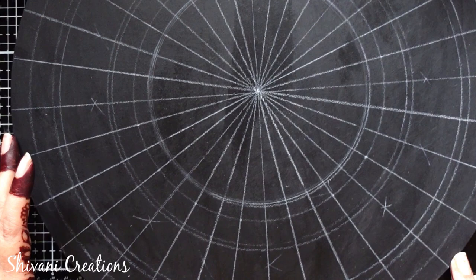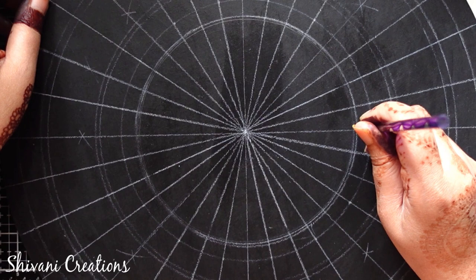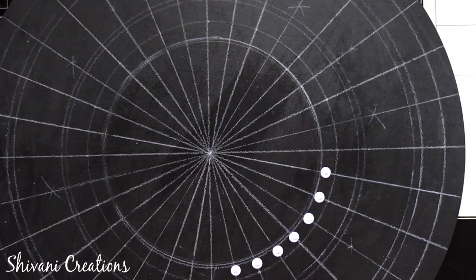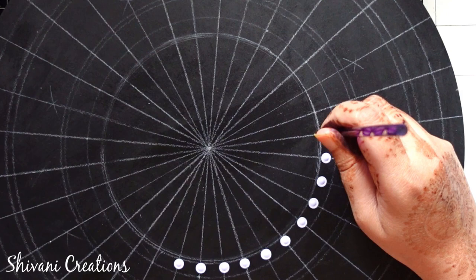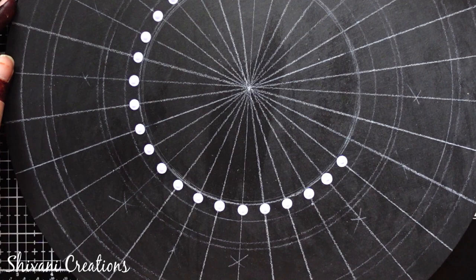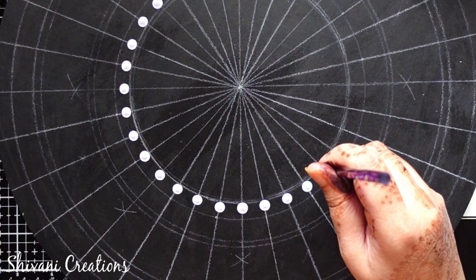So starting with my first pattern. All the mandala tools links are given in the description box if you want to purchase anything. So for my first row I am starting with light lavender shade. In the screen maybe it is looking white, but actually it is very light shade of lavender. So on each line, on each division I am making the circles. And after each dot you have to dip your tool into the color to get the perfect size of dots each time. Do it very carefully, patiently, and nicely to get the best results.